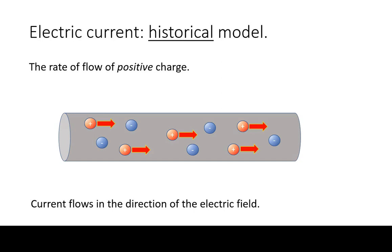Historically, current has been defined as the rate of flow of charge in the direction of the electric field. Because the electric field points towards the direction that positive charges accelerate, current has been modeled as the flow of positive charges along a conductor.